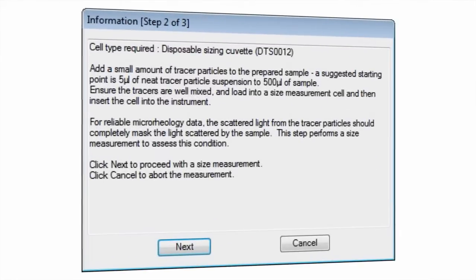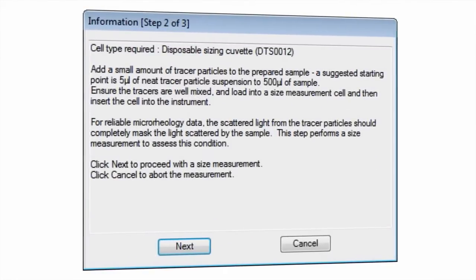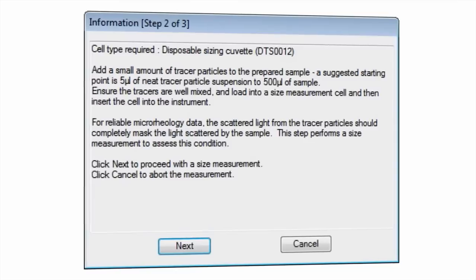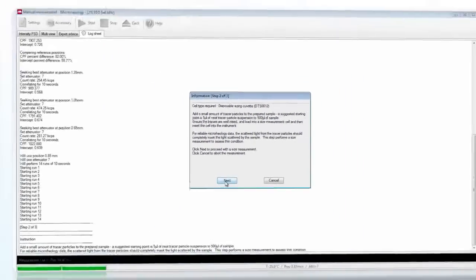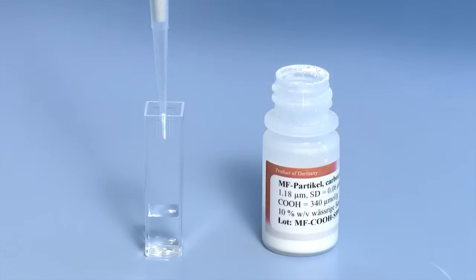These conditions are assessed by using a DLS pre-measurement step to compare the intensity particle size distribution peak from the sample against the intensity particle size distribution peak following addition of tracer particles to the sample.